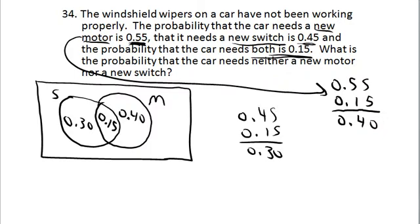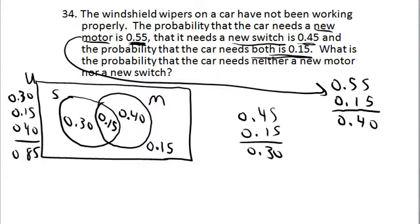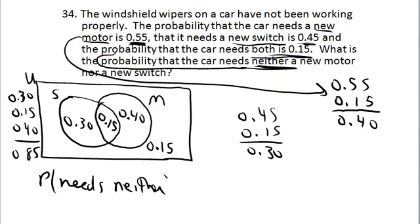Keep in mind that the probability of everything within the universal set — the rectangle — has to add up to 1. Adding those three numbers: 0.15 plus 0.40 plus 0.30 gives 0.85. So subtracting from 1 leaves a probability of 0.15 that the car needs neither. That 0.15 is outside both the switch circle and the motor circle, and that is exactly what the question asks for. The probability that the car needs neither a new switch nor a new motor is 0.15.